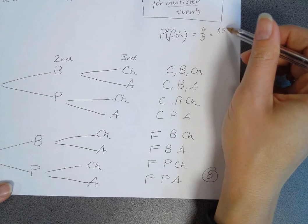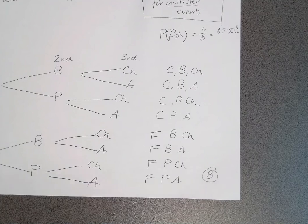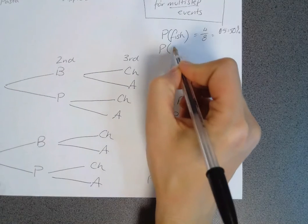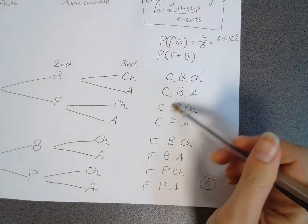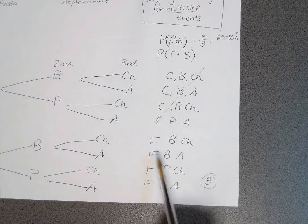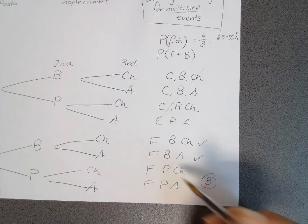You might also say what is the probability of eating the fish and the beef. We know none of these have fish in them, so they don't count. But here we've got fish and beef, fish and beef, but now we've got fish and pasta.